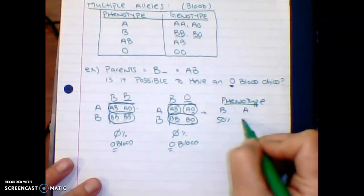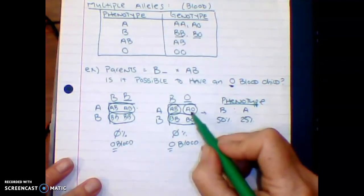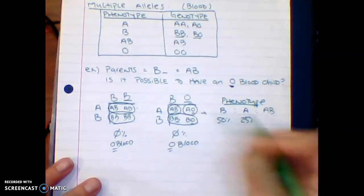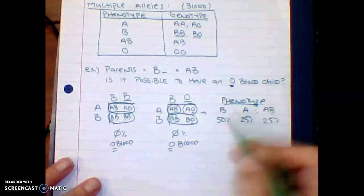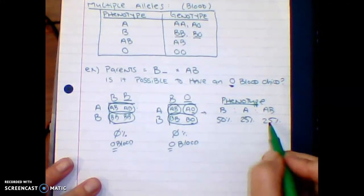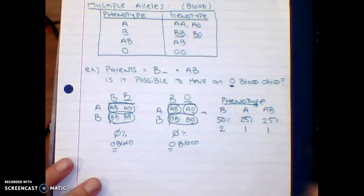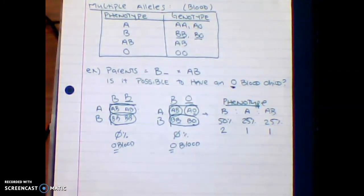So B blood, we actually have a 50% chance. A blood, we have a 25% chance because it's AO. And then AB blood, you would actually have another 25% chance. So you can either write this as a percentage or you could say 2 to 1 to 1, and that would be fine as well.